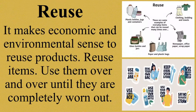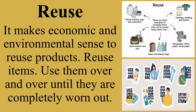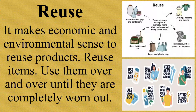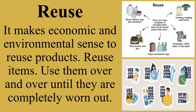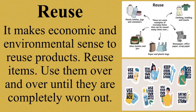Reuse. It makes economic and environmental sense to reuse products. Use items over and over until they are completely worn out. Things we can use repeatedly include glass bottles, jars, papers, plastic bags, scrap paper, newspaper, and many more. Reusing involves the repeated use of items or parts of items which still have usable aspects. It means using an object or material again and again for the same purpose or a different purpose without altering the form of the product.